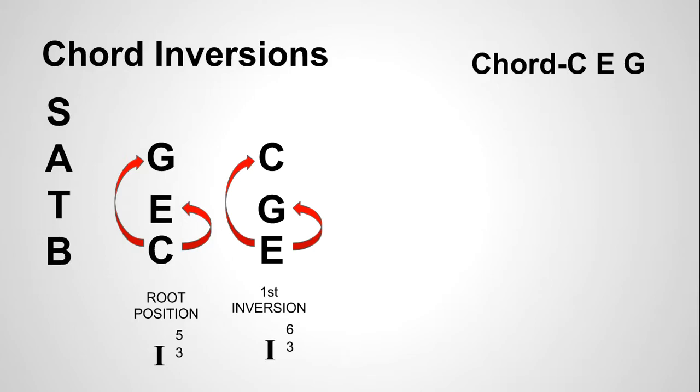So this, in first inversion, we call it a I six-three chord. So we have the I five-three chord, which is root position. We have a I six-three chord, which is first inversion.